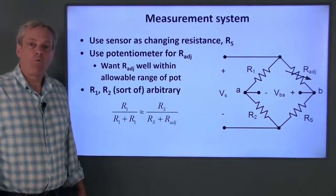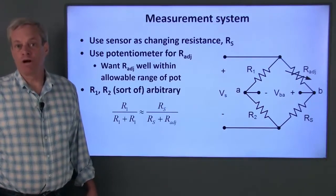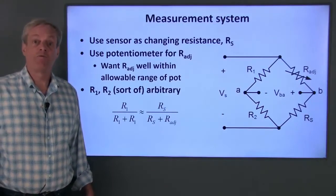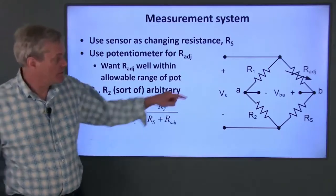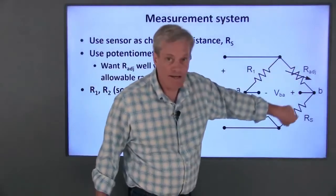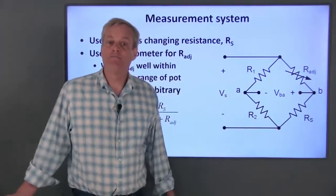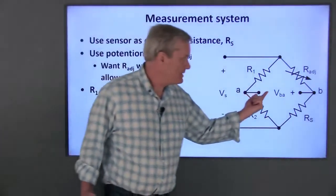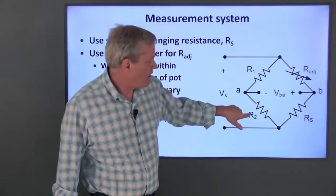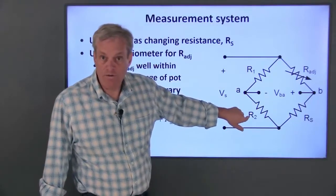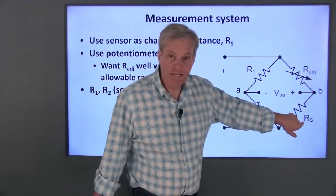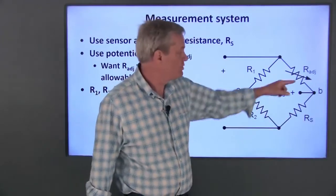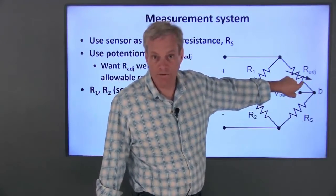The resistors R1 and R2 can be chosen somewhat arbitrarily in this circuit, but there are restrictions. This circuit still consists of two voltage dividers in parallel. I'll leave the math for you to do, but the general result is that if V sub Ba is zero, the ratio of R2 to R1 plus R2 has to be the same as the ratio of the sensor resistance to the sum of the two resistances in the right leg of this bridge circuit.